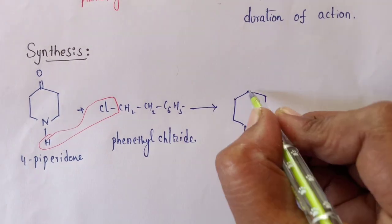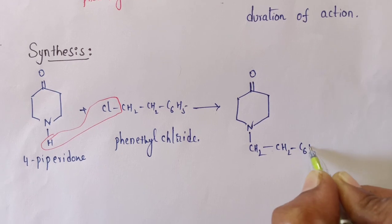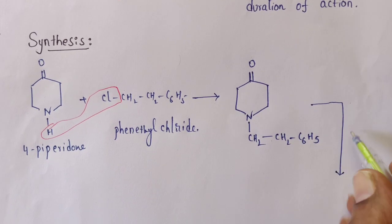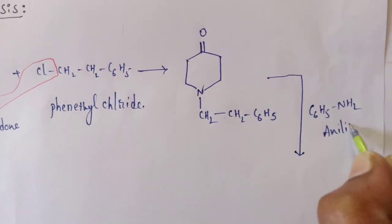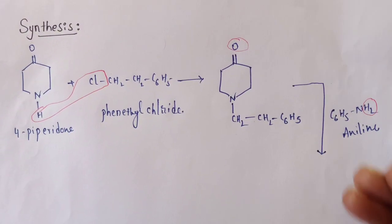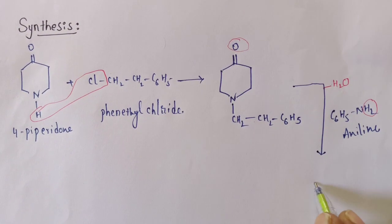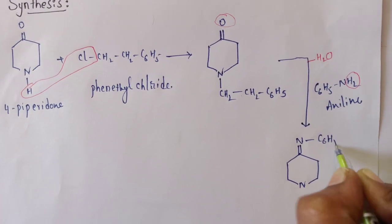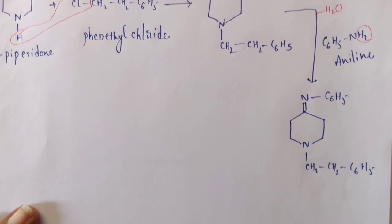This molecule is then treated with aniline (C₆H₅NH₂). What happens is the oxygen atom and H₂ are lost as water, keeping a double bond, and the nitrogen atom of aniline attaches — forming a piperidine ring with a double bond (imine) and a C₆H₅ group, while retaining the –CH₂CH₂C₆H₅ functional group.